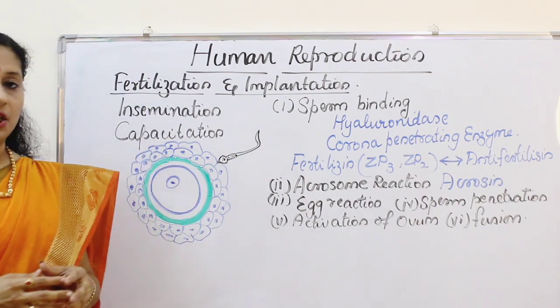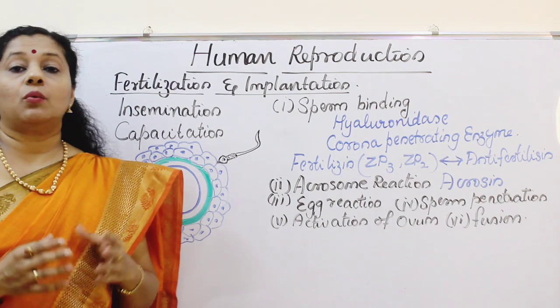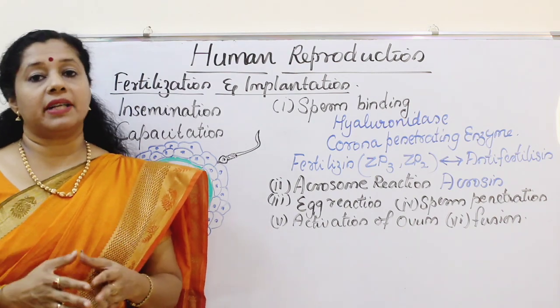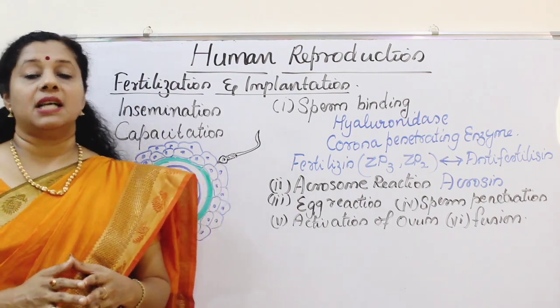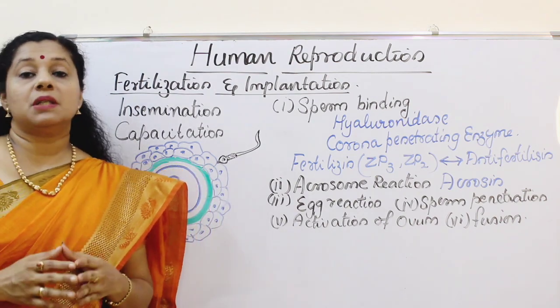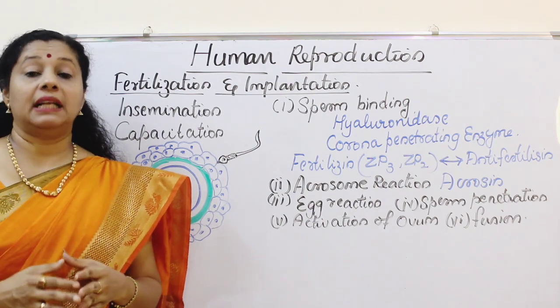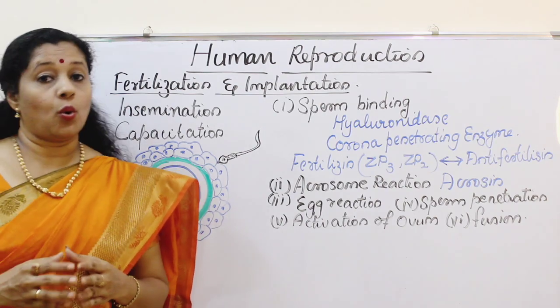After capacitation, it takes around 1 to 10 hours but on an average 5 to 6 hours to complete. So now the sperm is ready and motile, and it can go and fertilize an ovum.